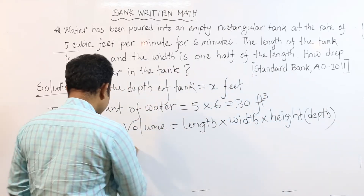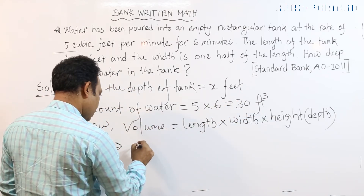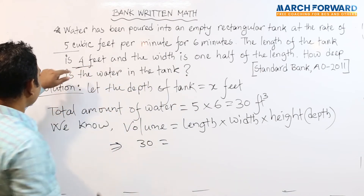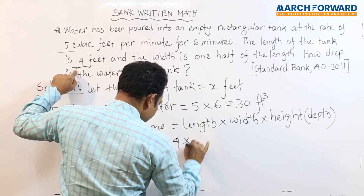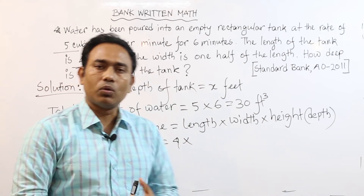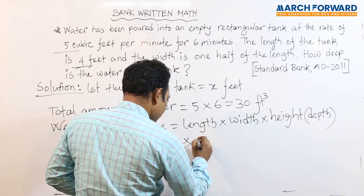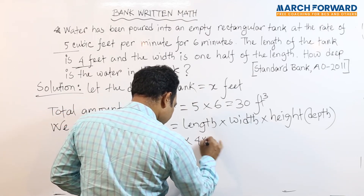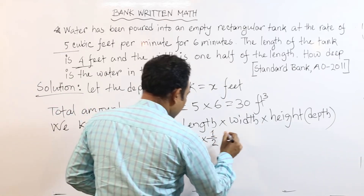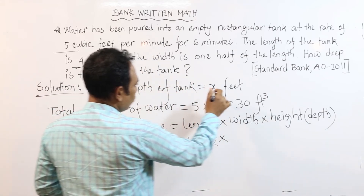The length is 4 feet. The width is one half of the length, which is 2 feet. The depth equals x. So the equation becomes 4 into 2 into x.